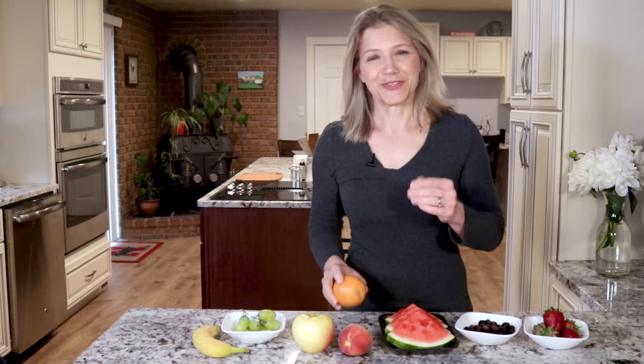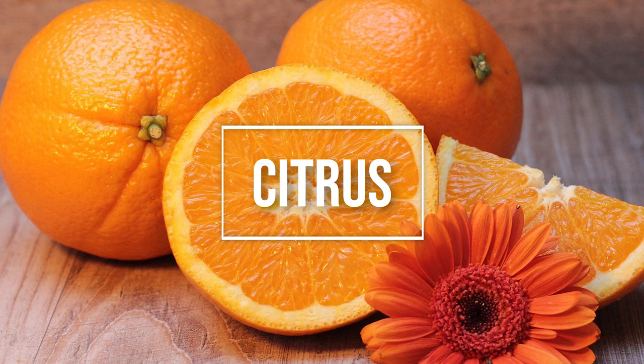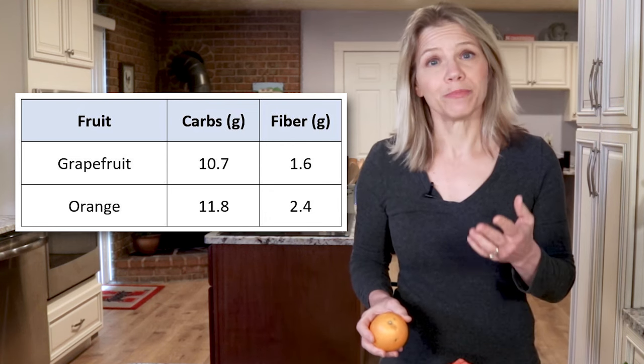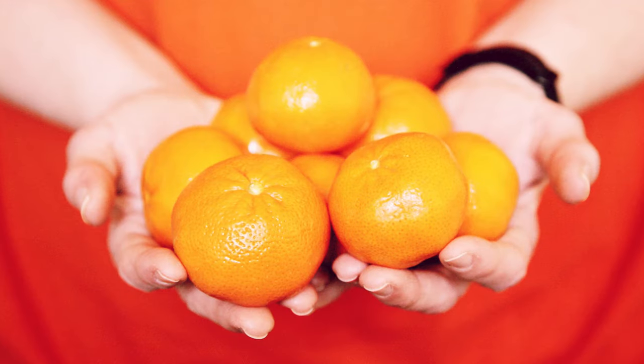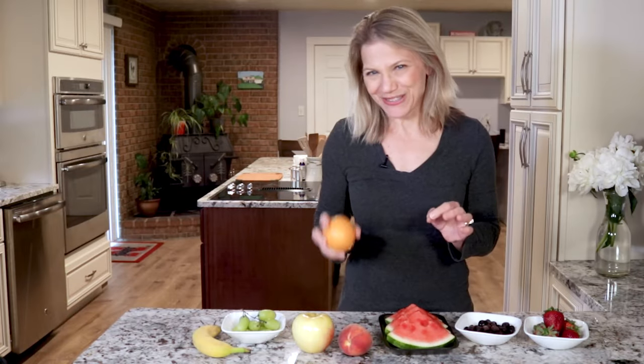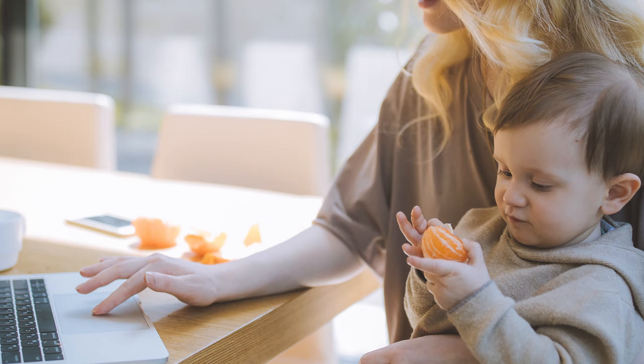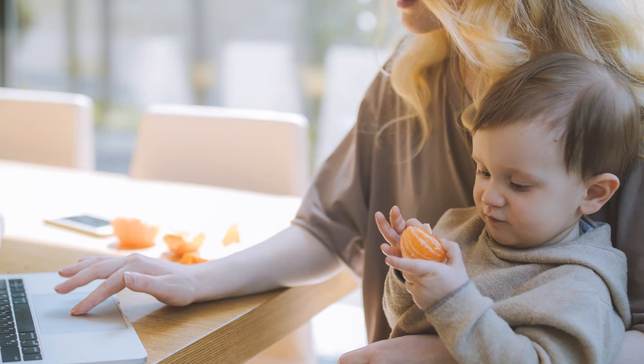Compared to some other fruits that will be coming up in this video, citrus fruits are relatively low in carbohydrates. Grapefruit is a good citrus choice with 10.7 grams of carbs and 1.6 grams of fiber, followed by oranges and mandarins. You might think of mandarins as clementines or tangerines or cuties — they're basically small oranges and they contain around 13 grams of carbs, two of which are fiber. Those fruits tend to be favorites of kids, and if you have little ones around and you are looking for some alternatives to junk food, then those mandarin oranges will do the trick.